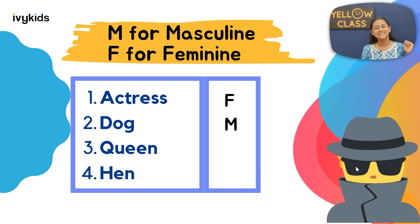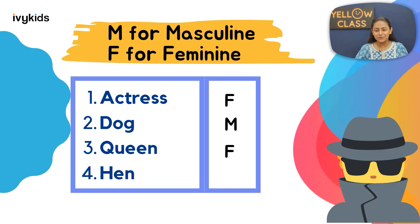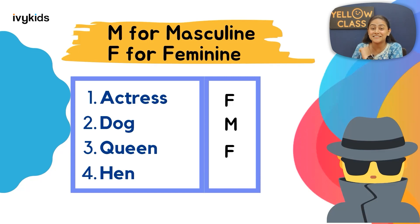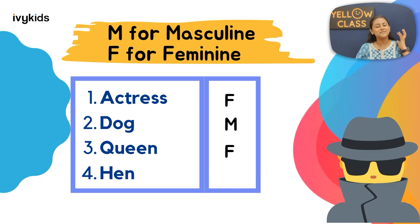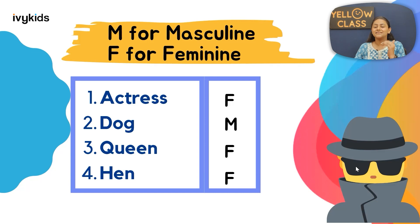Moving on to the next one: queen — masculine or feminine? Share your answers quickly. Queen is feminine — F. And the fourth word is hen — M or F? The answer is F, feminine. Great going, kids! I am really very happy to see you all actively giving your responses.